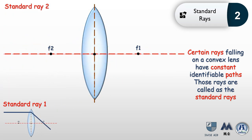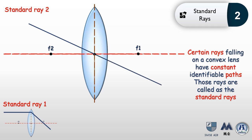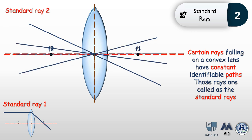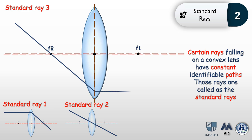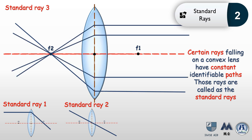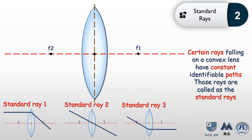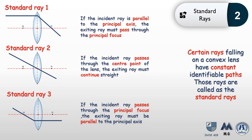The second standard ray: whenever a light ray falls exactly on the center point of the lens, it continues straight without bending — this applies from any direction. The third standard ray: whenever a ray passes through the focal point before hitting the lens, after exiting the lens it must be parallel to the principal axis. This is the opposite of standard ray one, and applies to any ray falling on the focal point. Make sure you remember all three — they are needed to draw images.